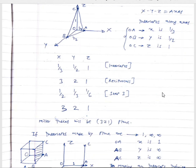One thing to keep in mind: in more than 99% of cases you only need to follow two steps — find the intercept and take the reciprocal — then enclose in brackets to show the Miller indices. Only in rare cases where intercepts are fractions like 1/2 or 1/3 do you need steps 3 and 4. If the intercepts are 1, infinite, or 2, there is no need to follow steps 3 and 4.